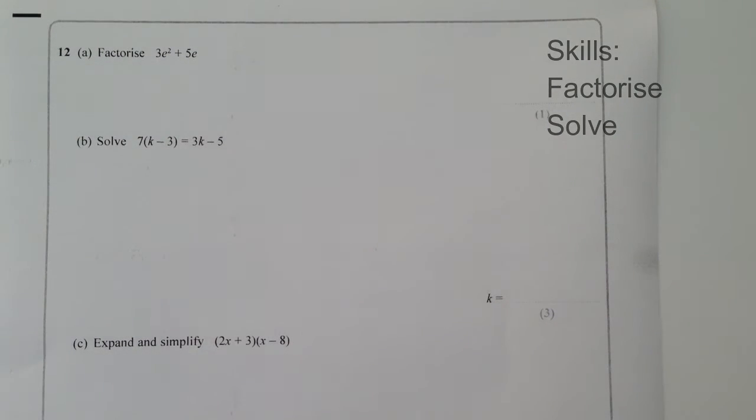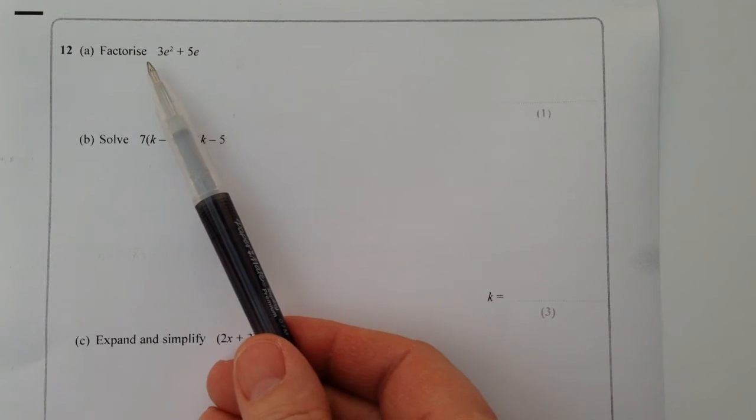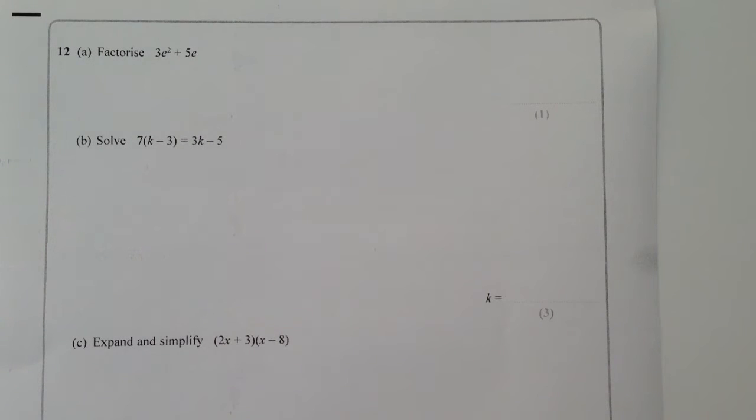Hi, so this is question 12 in this particular series of questions. I'm going to deal with A and B on this particular video, and then we'll look at C and D in the next video. So the first one asks us to factorise 3e squared plus 5e.